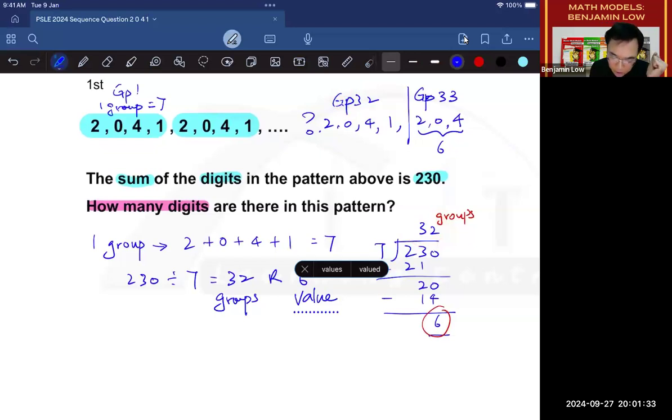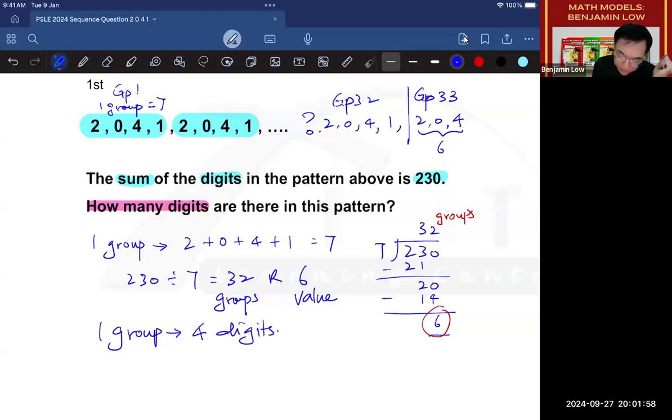So now let's answer the question. The question says, how many digits are there? Now, how many digits are there in one group? What is your answer? If your answer is 4, you're right because there's 1, 2, 3, 4 digits. Zero counts as a digit. So if one group has 4 digits, and I have 32 complete groups, then I need to take 32 times 4 to get 128 digits.